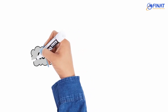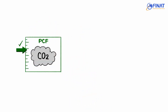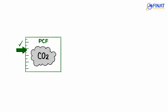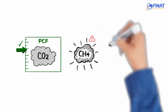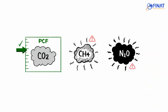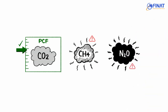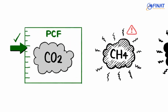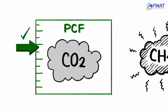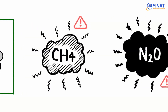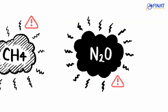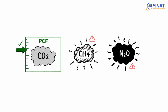CO2 is the measure used for emissions in PCF, but CO2 is not the only emission that impacts global warming. Methane and nitrous oxide are two others, and both have a much bigger influence. Fortunately, there are global standards which apply a factor multiplier to different emissions — for example, one kilogram of nitrous oxide is calculated as being equivalent to 298 kilograms of CO2.